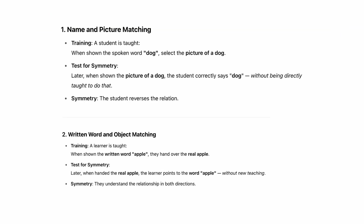Here are symmetry examples. When shown the spoken word 'dog' and the writing of 'dog,' a learner selects a picture of a dog. Later, when someone says 'dog,' they can touch the picture of the dog, and when shown a picture of a dog they can say 'dog.' Also, when shown the written word 'apple' they can touch the real apple, and when handed a real apple they can point to the written word on a card. That's symmetry.